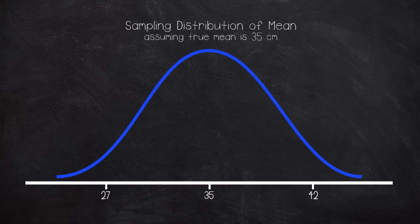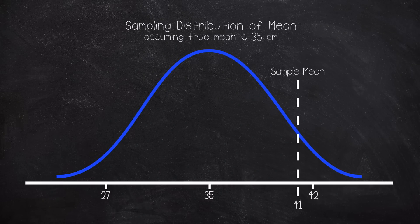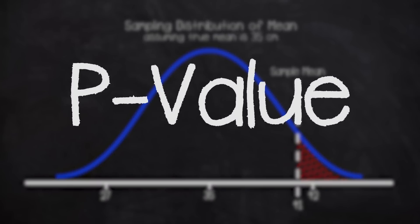We've taken a sample of 25 fish from the lake and found them to have a sample mean length of 41 centimeters. We can then ask the following question: under our null hypothesis that the true population mean length of fish is 35 centimeters, what is the chance that we end up with a sample mean length of 41 centimeters or more? This probability is the p-value. If we were to calculate this probability, we would find that it's approximately 1%, or 1 in 100.